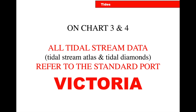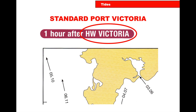On Charts 3 and 4, all tidal stream data refer to the standard port Victoria. It's written in red on top of the tidal stream atlas and above the tidal diamonds. All tidal stream data on the RYA charts are referenced from Victoria — it's circled at the top of the page. I go into this quite a lot because you will make the mistake once and go to the nearest harbour and not Victoria, and the answers will never be right if you do that.